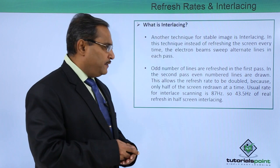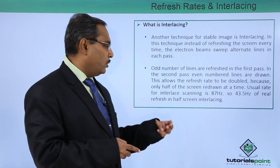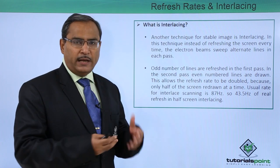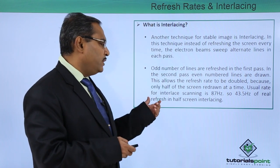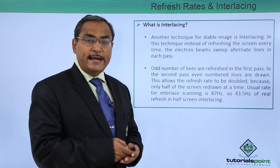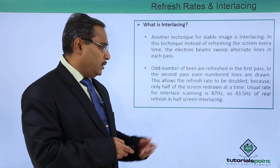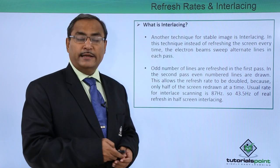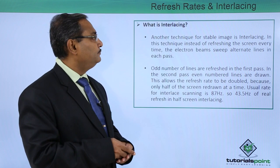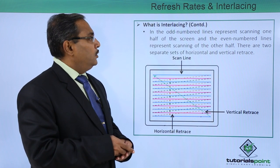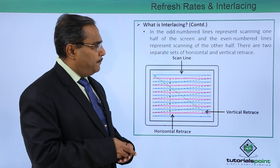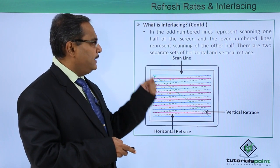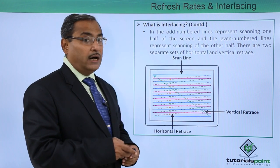This allows the refresh rate to be doubled because only half of the screen is redrawn at a time. The usual rate for interlaced scanning is 87 hertz, which corresponds to 43.5 hertz of real refresh for each half-screen pass.